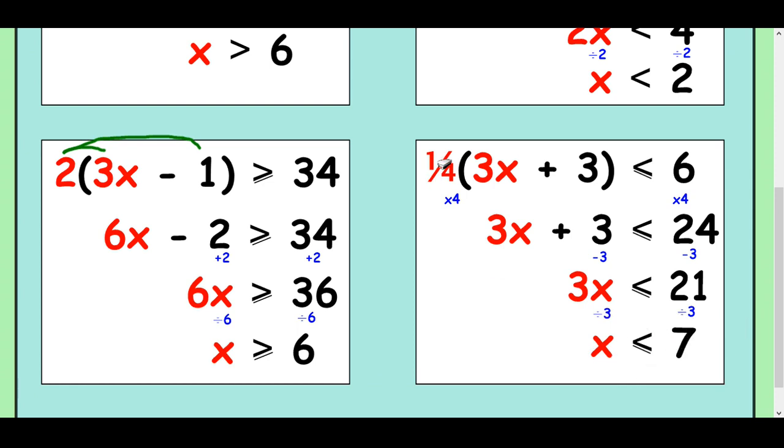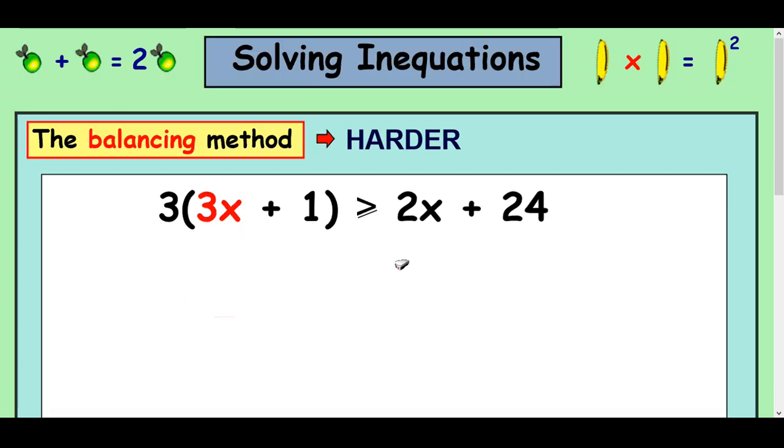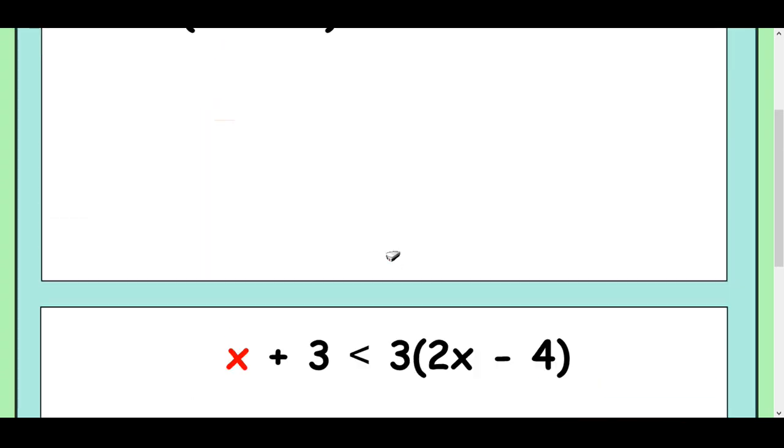So remember, if you've got a multiplier in front of the bracket and you're trying to get rid of a fraction, just times the fraction in front by the denominator, not inside the bracket as well. Okay, 2 to go.